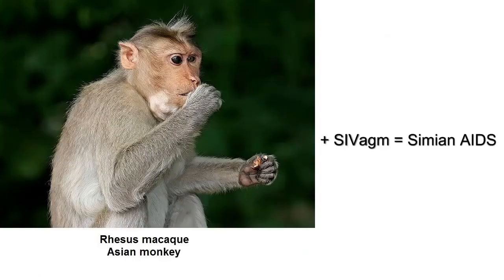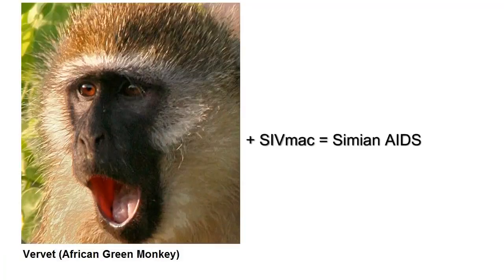However, if you take a rhesus macaque, a monkey from Asia, and infect it with the SIV from the African monkey, or if you infect the African monkey with the Asian virus, the result is called simian AIDS and it parallels what we see in humans.